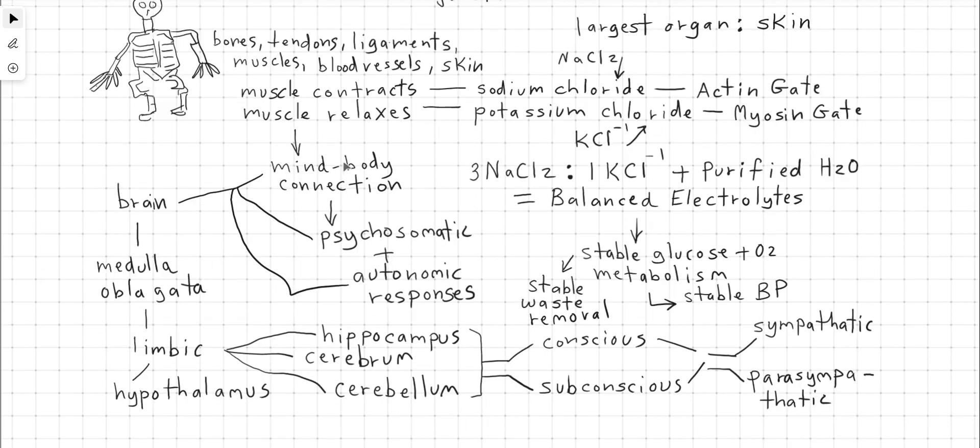The next point is the mind-body connection, the relationship between the thoughts and the physical body. This is the psychosomatic mind-body connection. We start with the consciousness to the brain, and then the brain is split up into the brain stem, which autonomically, automatically pumps your heart. This is the medulla oblongata. Then we have the limbic system, which is kind of in the central part of the brain, broken up into the hippocampus, cerebrum, and cerebellum. And then we have the guidance system, the hypothalamus.